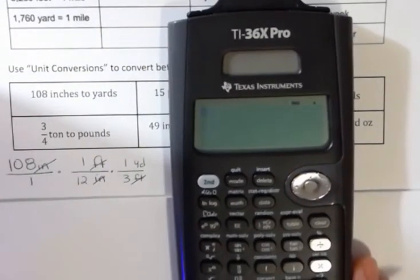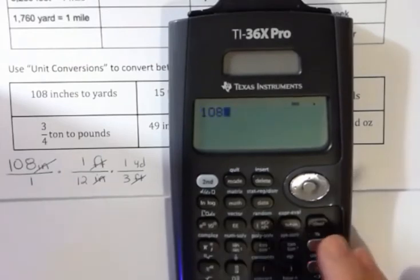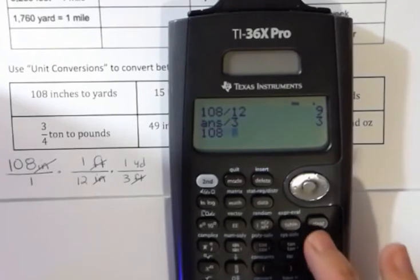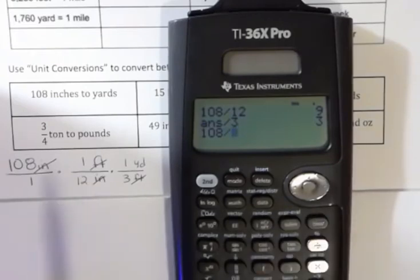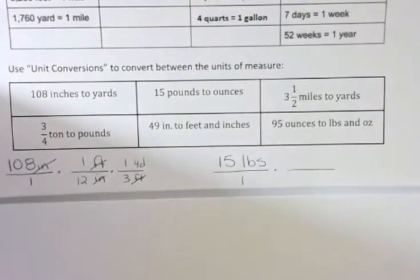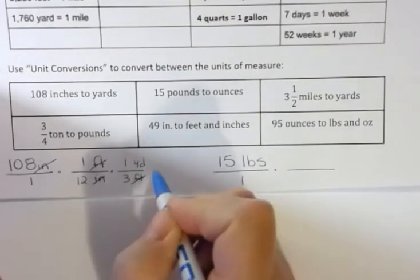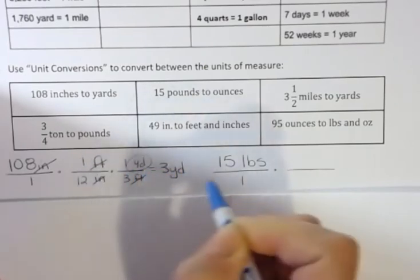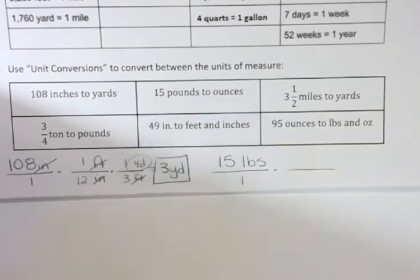Then I could do the math on my calculator. What I have is 108 divided by 12, and then divided by 3, and that's 3. But I also could do 108 divided by, and I could do 12 times 3 is 36, and get 3 as well. So either way you want to think about that. So I have 3, and it's yards because that's the unit that I had left. So 3 yards and 108 inches.